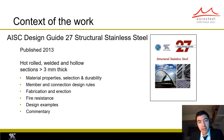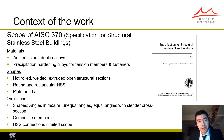Even though the publication of AISC Design Guide 27 contributed towards making it easier for engineers to design structures made of stainless steel in the U.S., the fact that the design guide lacked legal status meant that engineers still needed to seek special approval in order to design stainless steel structures. In addition, the design rules given in AISC Design Guide 27 were limited and somewhat conservative due to the lack of research at the time.